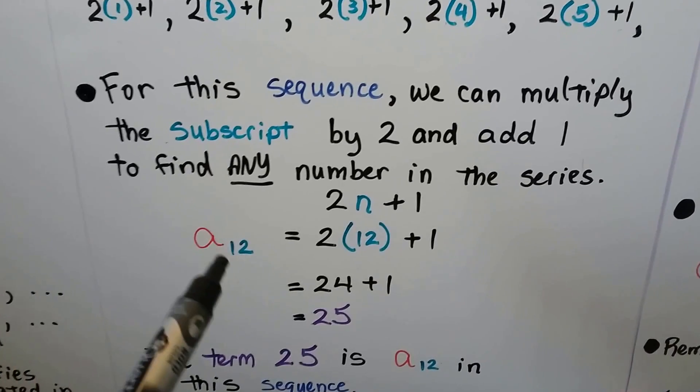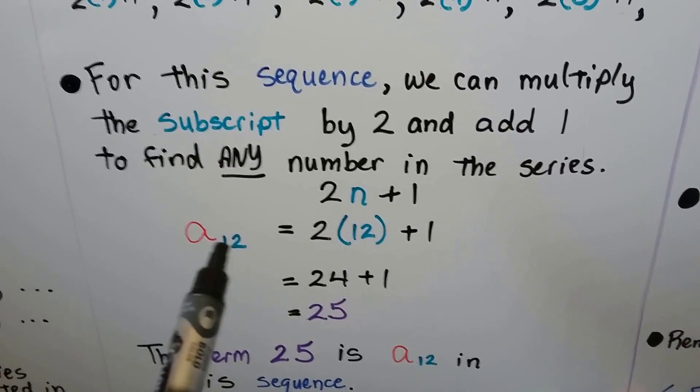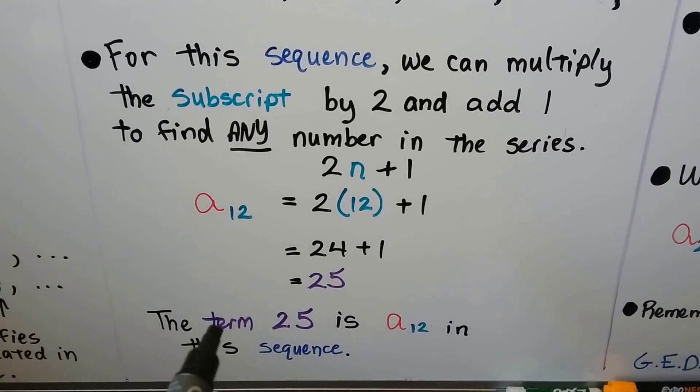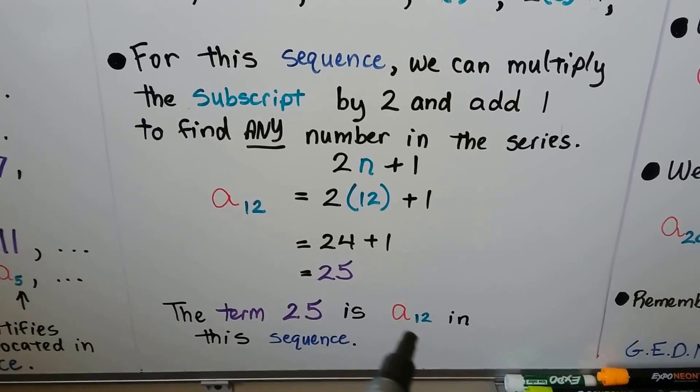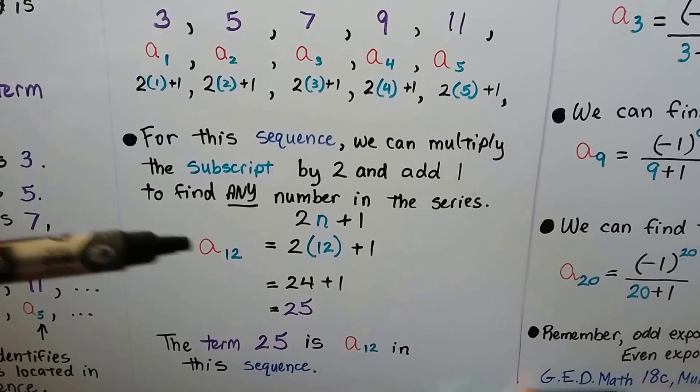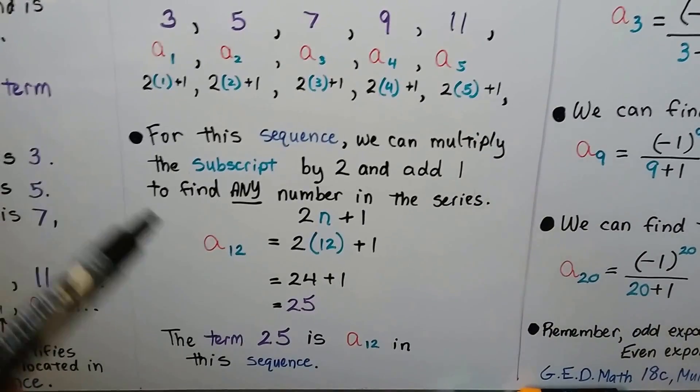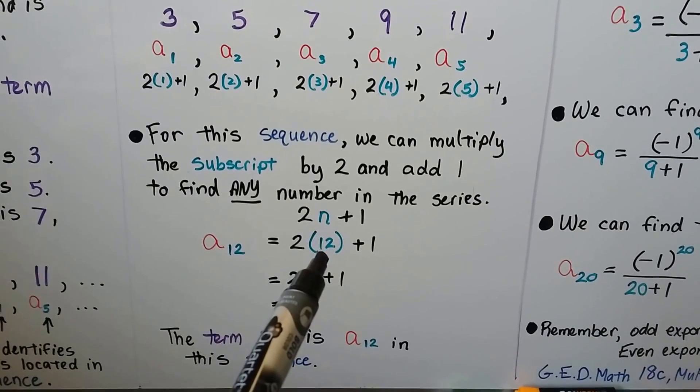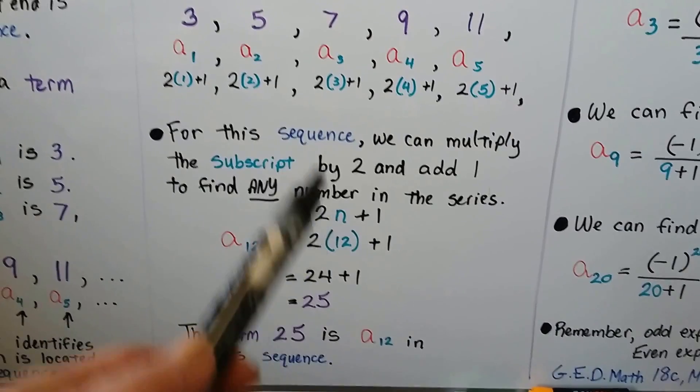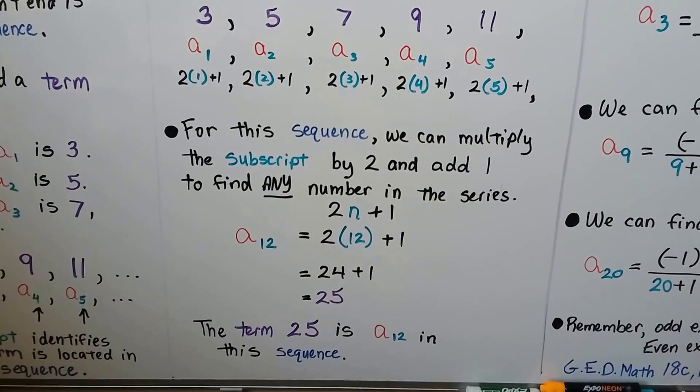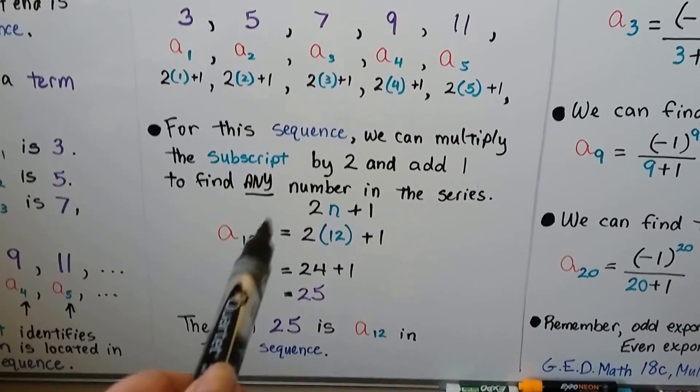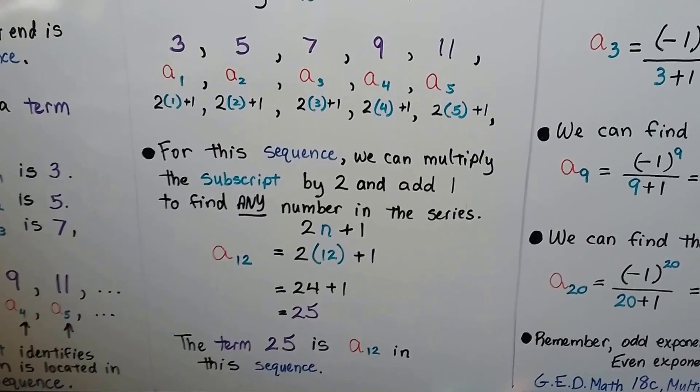We could find a sub 12. All we have to do is multiply 2 times 12 and add that 1. That would give us a 25. So, the term, the number 25, is a sub 12 in this sequence. And we could find a sub 100 if we wanted to. We would just do 2 times 100, which is 200, plus 1. It's 201. So, we would know the hundredth number in this sequence. See that? We could find any number in the sequence by following that rule for that sequence.